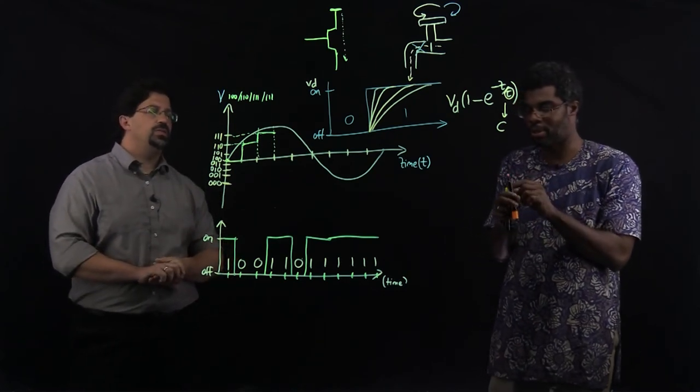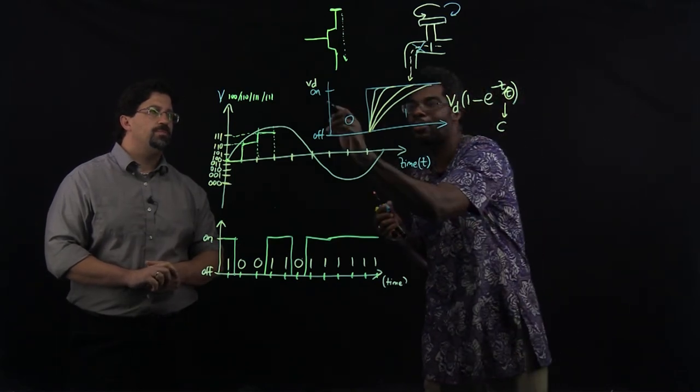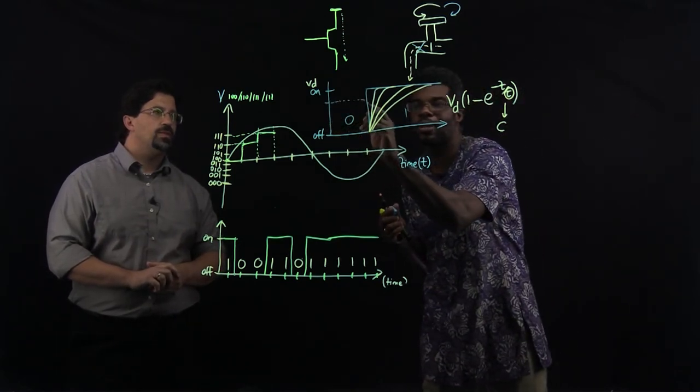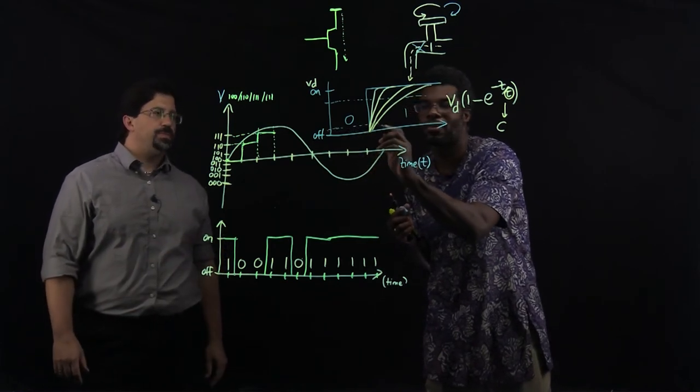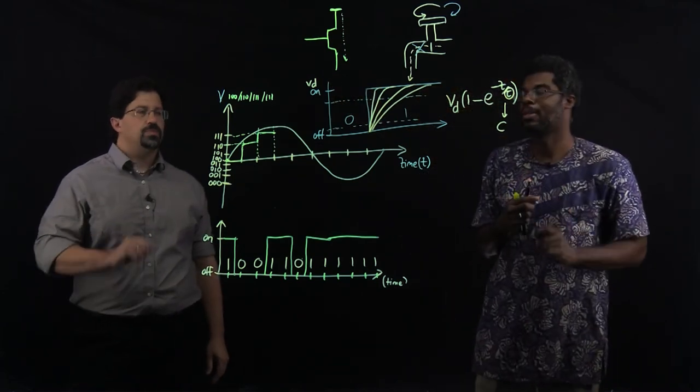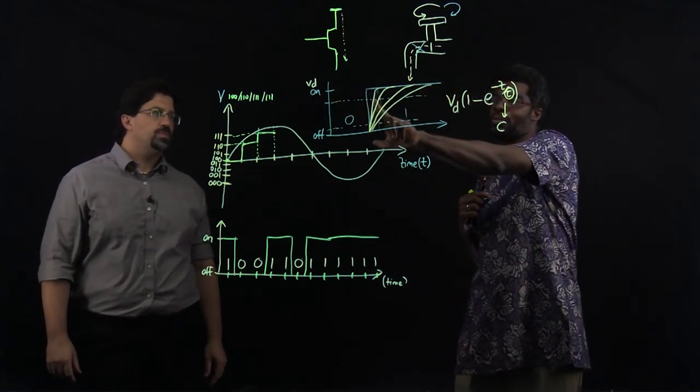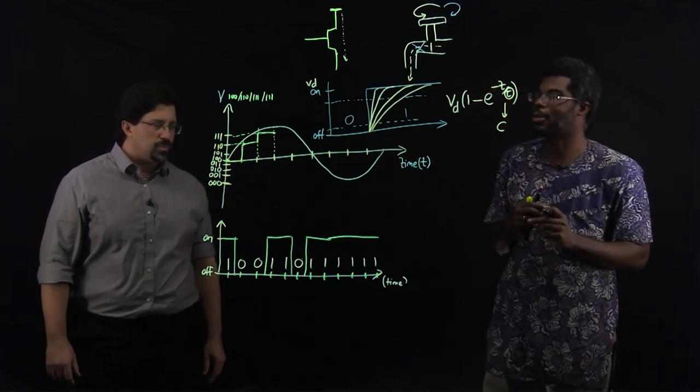Yes, actually. So what we do is we set a threshold that says on is really once it's above a certain value. And off is the same. We actually set a threshold that is not quite below and not quite on. And so long as the value has crossed this, then we call that on. And so long as the value is below that, then we call that off.